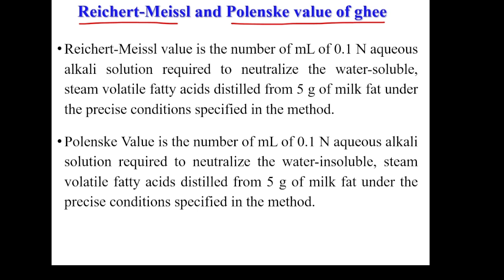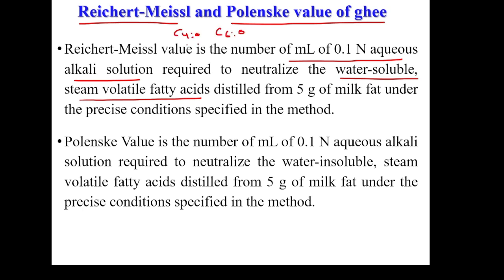We will learn how to determine the RM and Polenske value of ghee and what their significance is. The RM value is the number of ml of 0.1 normal alkali solution required to neutralize the water-soluble steam volatile fatty acids distilled from 5 grams of fat under the precise conditions specified in the method. Two fatty acids contribute to the RM value: butyric acid (C4:0) and caproic acid (C6:0).